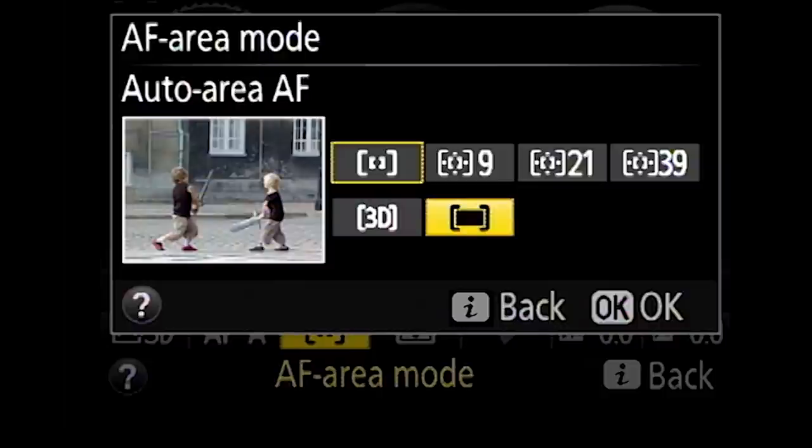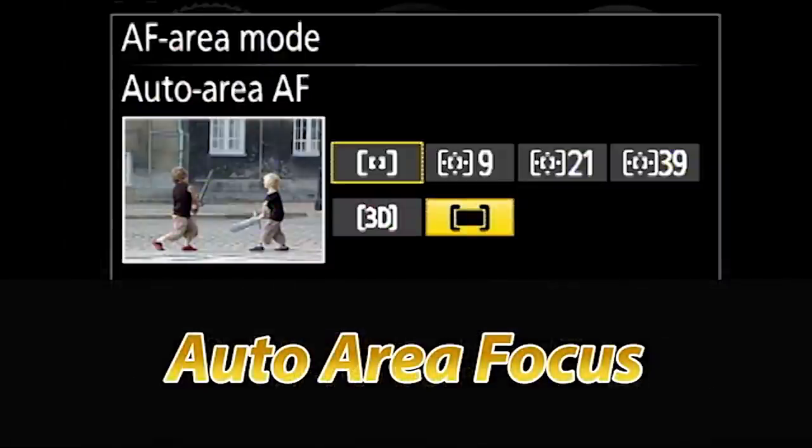The last cluster is the auto area autofocus. Say that ten times real fast. What this does is it tells the camera to find the closest subject to you and to focus on that. It's really for pure beginners who don't want to mess with their focus squares.